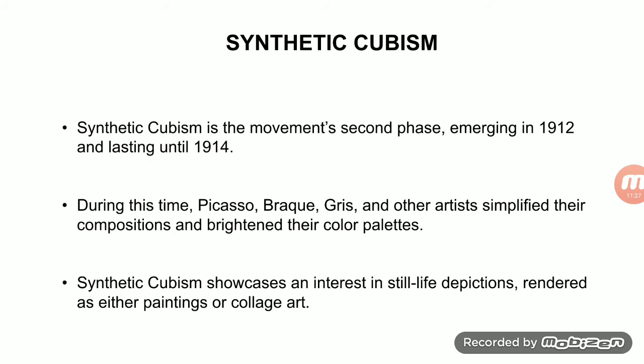Synthetic Cubism is a second phase emerging in 1912 and lasting until 1914. During this time, Picasso, Braque, Gris, and other artists simplified their compositions and brightened their color palette. Unlike Analytical Cubism, which used neutral colors, Synthetic Cubism used a bright color palette. It also showcased an interest in still life depictions, collage art, and experimentation in still life.